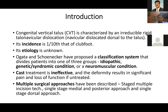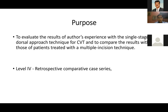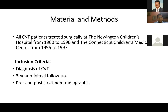In most cases cast treatment is ineffective and the deformity results in significant pain and functional loss if untreated. Multiple surgical approaches have been described: staged multiple incision technique, single stage medial incision, medial and posterior incision, and single stage dorsal approach. The purpose of this paper was to evaluate results of the single stage dorsal approach and compare them with the single stage multiple incision technique. It's a level 4 retrospective comparative case series including all CVT patients treated surgically from 1960 to 1997, with minimum three-year follow-up and available radiographs.